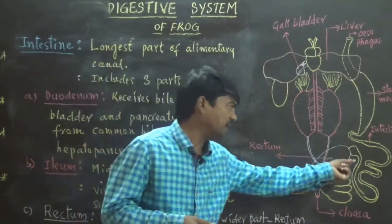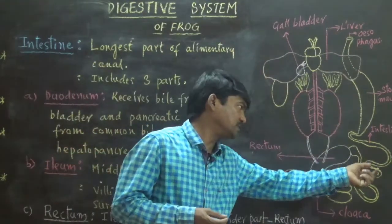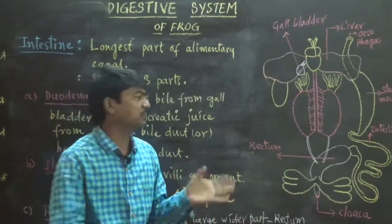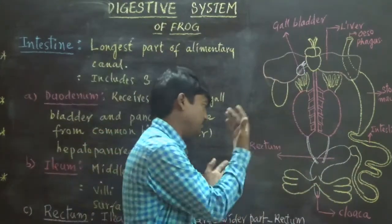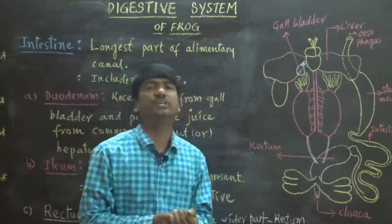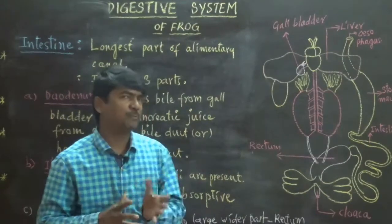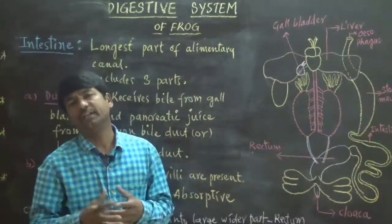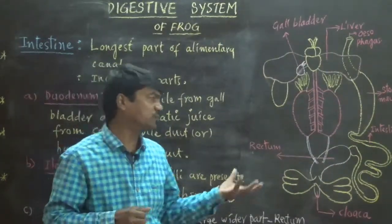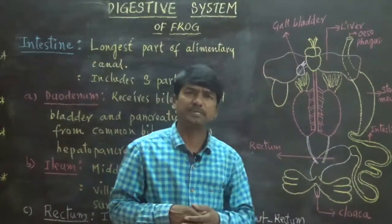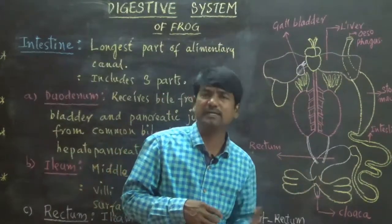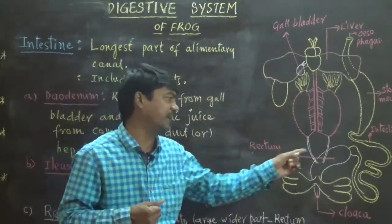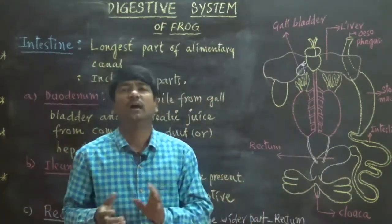The rectum is a small sac-like structure present in the posterior region. It leads into the cloaca. The importance of the rectum is that it reabsorbs water molecules present inside the fecal matter through this structure.